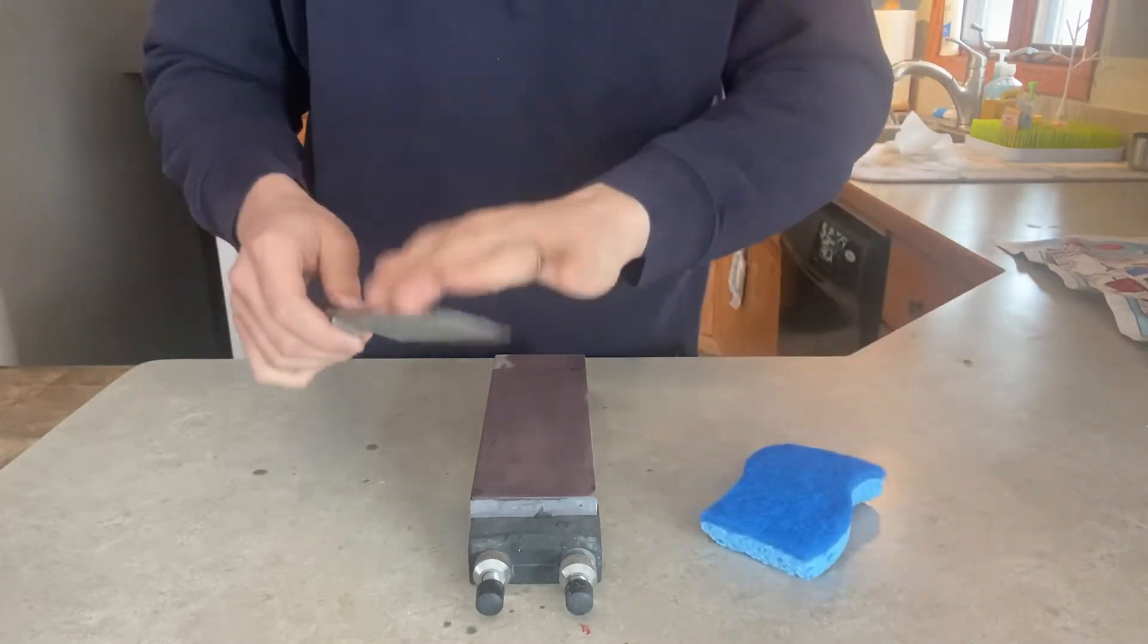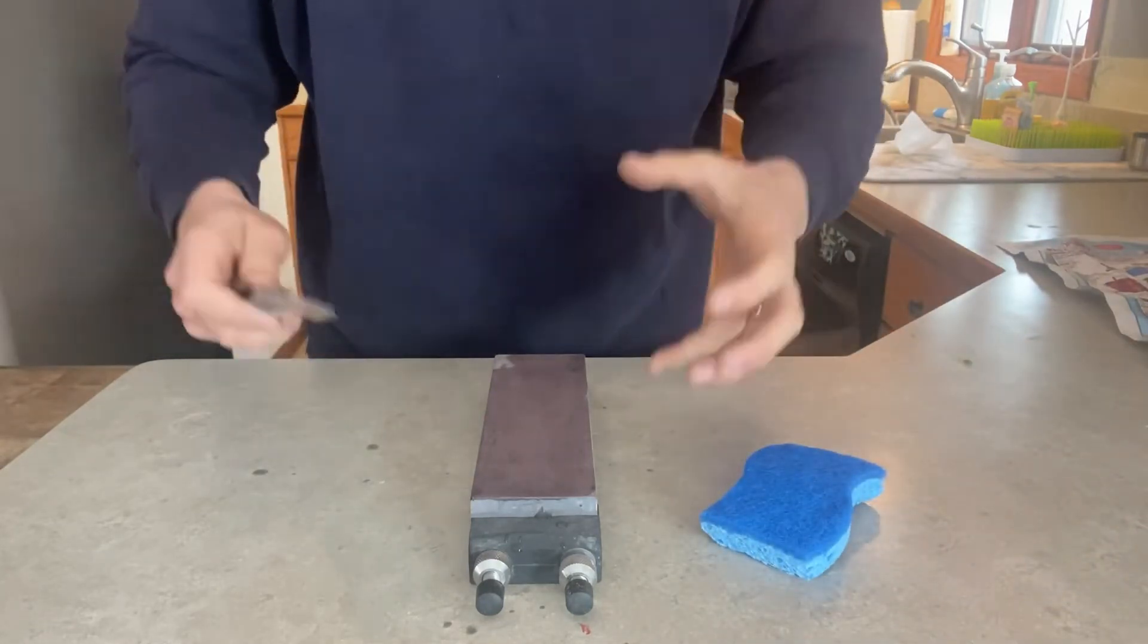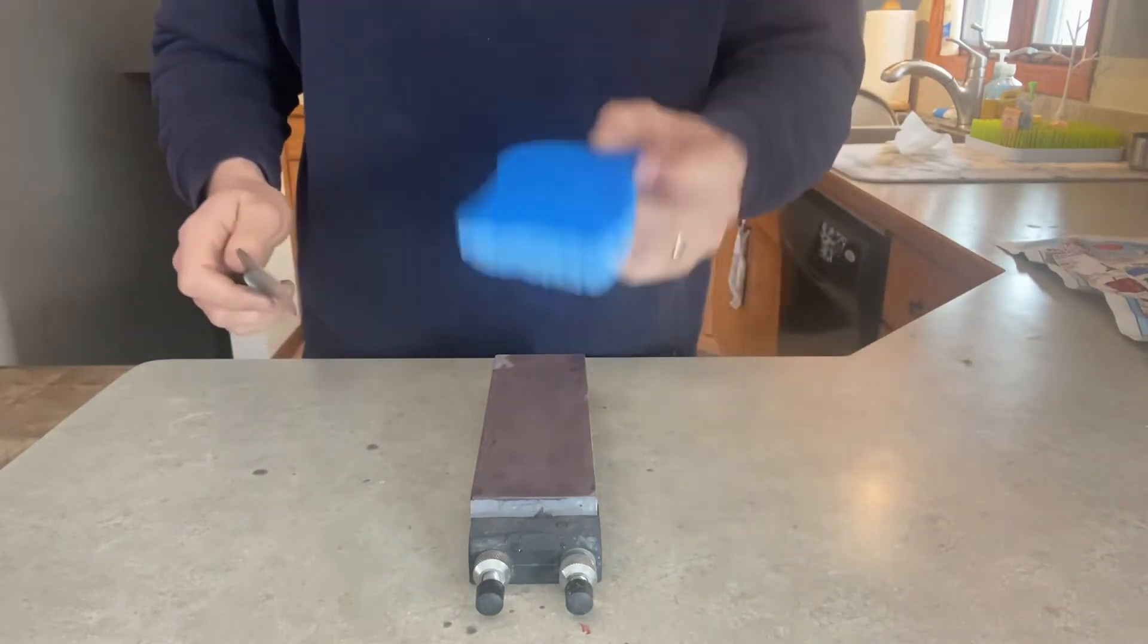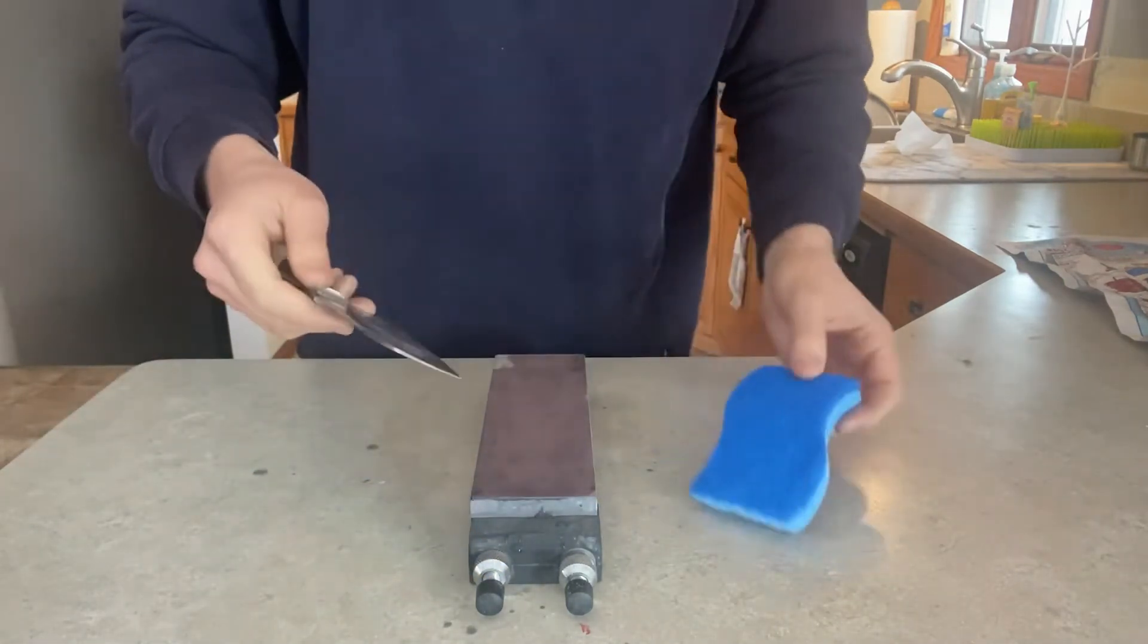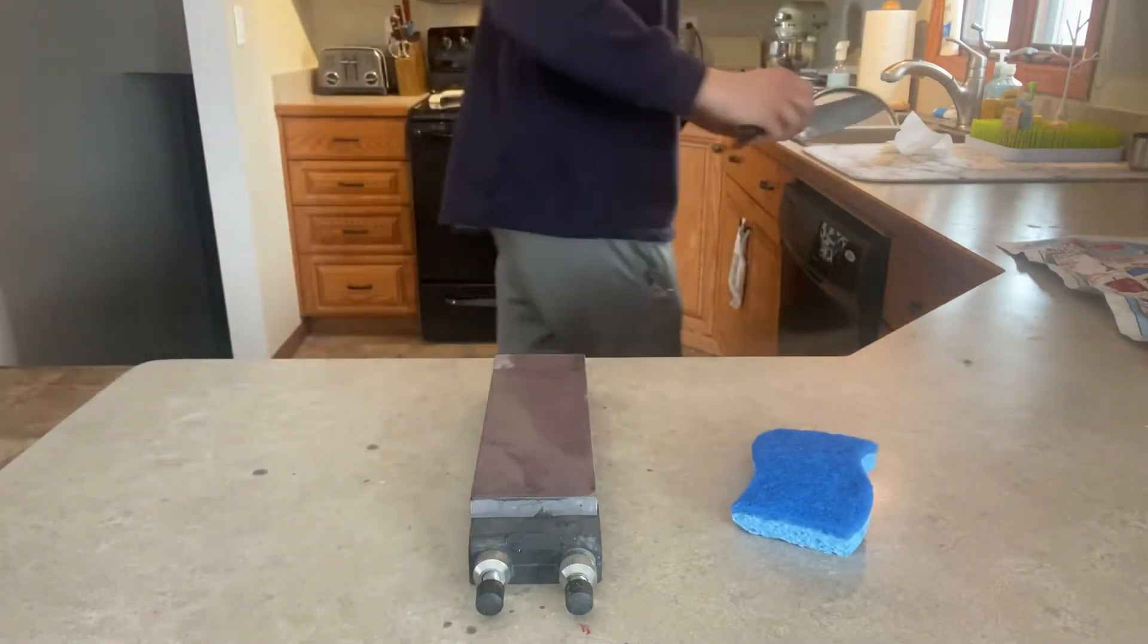So with these kind of steels, I like to get mechanical with it. So I've got the scratchy side of a scotch brite here. I'm just gonna make sure, let me wash this blade off real quick.